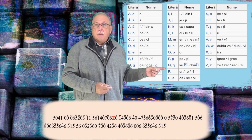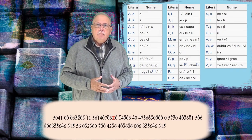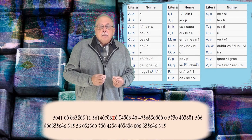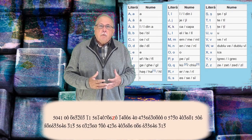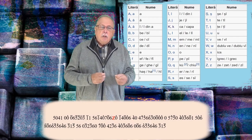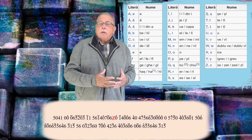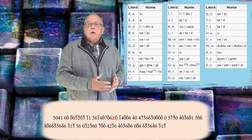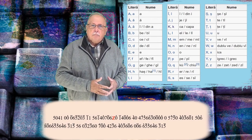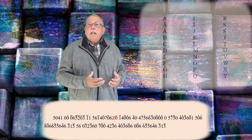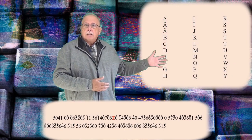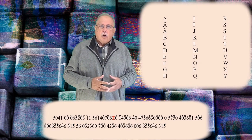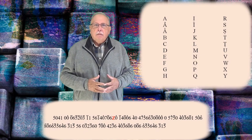Și mai știm, din alfabet, că Z este ultima literă din alfabet. De aici rezultă că cele 30 de litere au fost înlocuite cu câte o cifră și pentru început putem presupune că acest lucru s-a făcut în cazul literelor în ordinea din alfabet, iar în cazul cifrelor în ordinea lor crescătoare sau descrescătoare. Ar trebui să avem atunci trei grupe de câte zece litere, așa cum vedeți aici. Putem spera pentru început că cifrele care înlocuiesc literele sunt luate în ordine, dar trebuie să încercăm câteva variante.